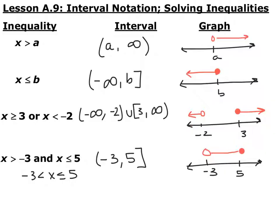On the graph, you have your number line with both numbers marked. Open circle on negative 2, closed circle on positive 3. 'Or' is like oars of a boat — you go out in opposite directions, so the arrows go off either way: less than negative 2 and greater than 3.